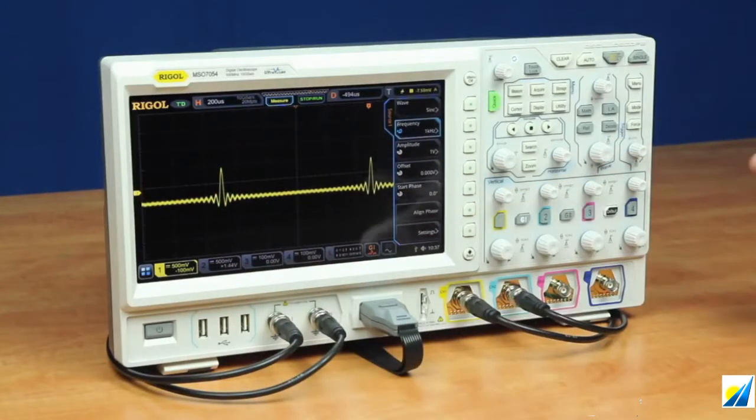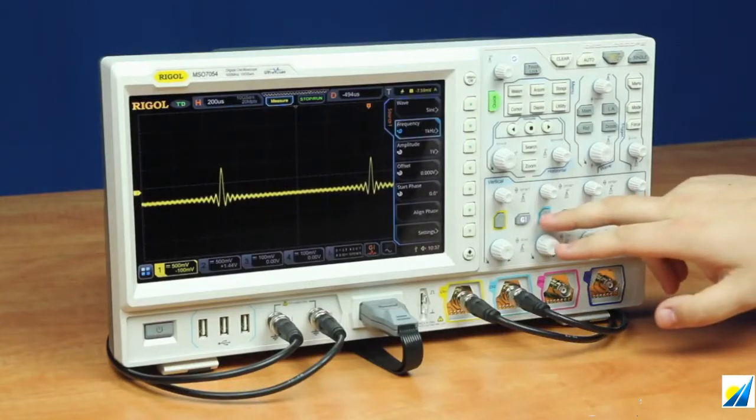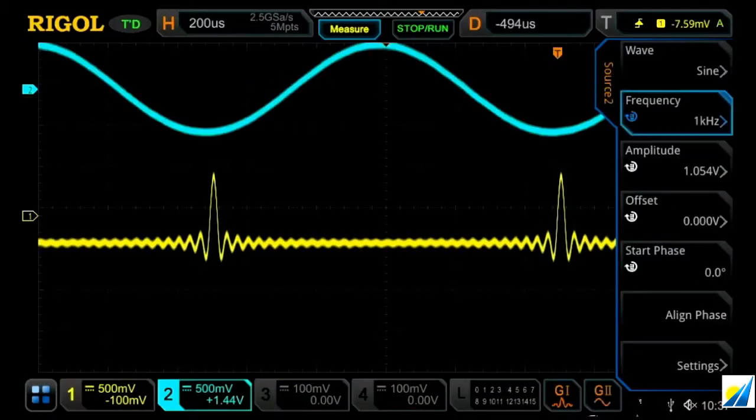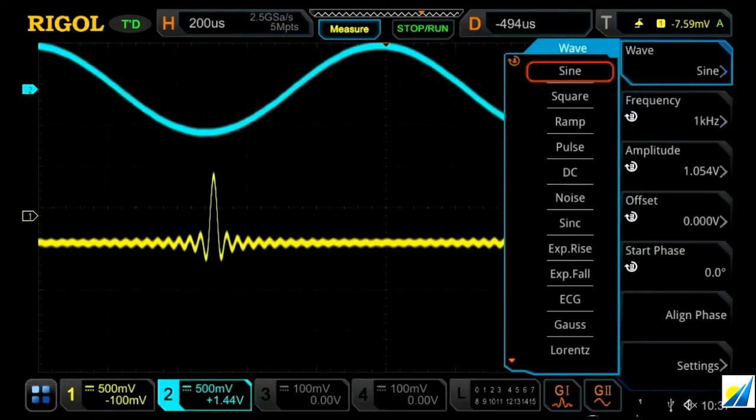But then some of the other advantages of having the built-in waveform generator is if I turn on channel two, and then our second waveform generator, we've got our standard waveforms: sine wave, square wave, ramp, pulse, DC, and noise.